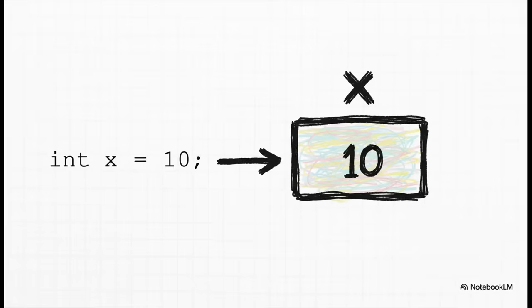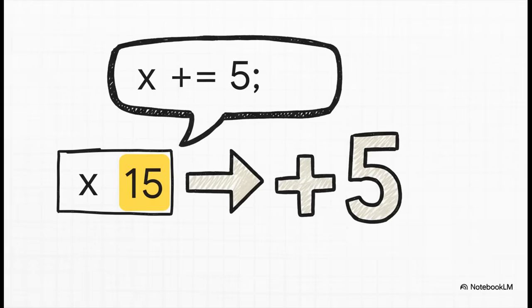You know, the best way to really wrap your head around this is to just see it in action. So let's follow a variable. Let's trace it through a few of these operations. We're gonna start with an integer, x, and we'll just give it a value of 10. First up, we're gonna use the addition assignment operator. We say x plus equals five. Now that's just the short way of saying x equals x plus five. So of course, our variable x is now 15. Pretty simple, right?